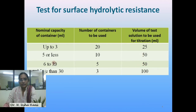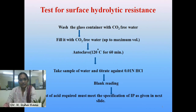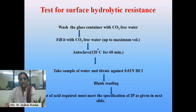The test details are as follows: wash the glass container with carbon dioxide-free water, then fill it with carbon dioxide-free water, then autoclave the container along with the water at 120 degrees centigrade for 60 minutes. Then take out the sample, take an aliquot from the bottle, and titrate against 0.01 normal hydrochloric acid. If any alkali has leached from the glass material, it will react with this acid and a neutralization reaction takes place.